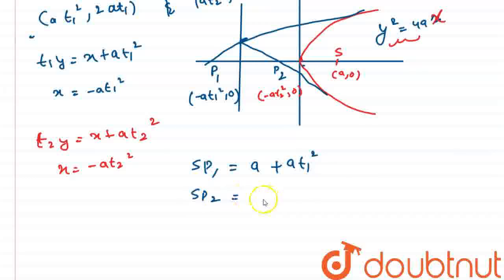Now, similar way, sp2 will be a, this distance a plus this distance. So, it will give me at2 square, a plus at2 square. Okay, we got sp1 and sp2.